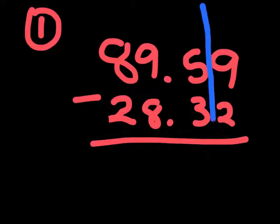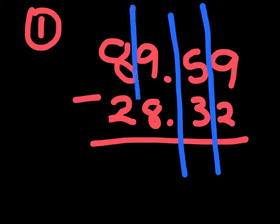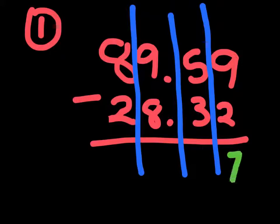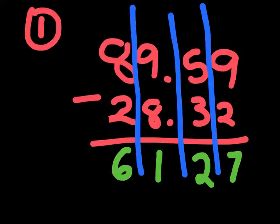Let's break this up into the 4 columns that we need, then do our subtraction. 9 minus 2 is 7. 5 minus 3 is 2. 9 minus 8 is 1. 8 minus 2 is 6. Then we bring down our decimal point, so our answer for 89.59 minus 28.32 is 61.27.